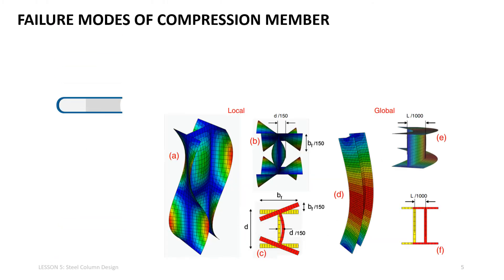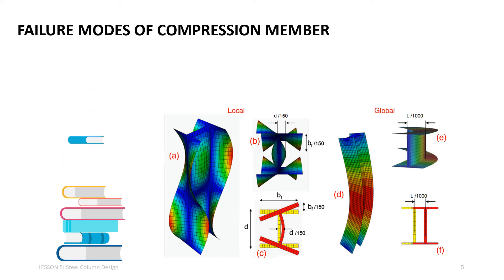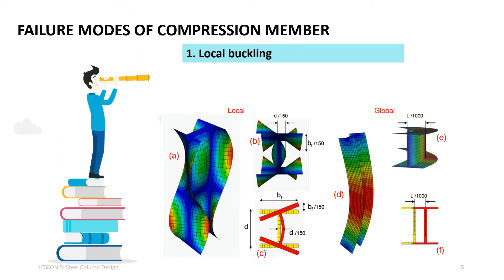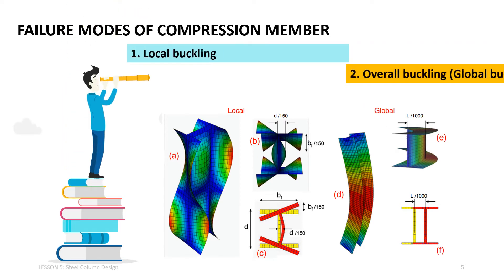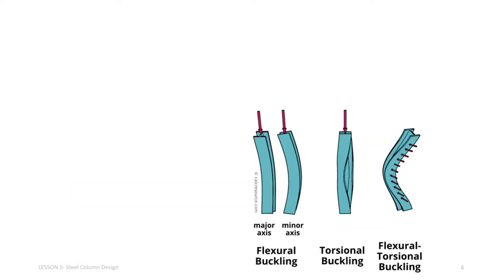Typical failure modes of compression members are local and global buckling modes. Figure A, B, and C show local buckling modes, and Figure D, E, and F show global buckling modes.